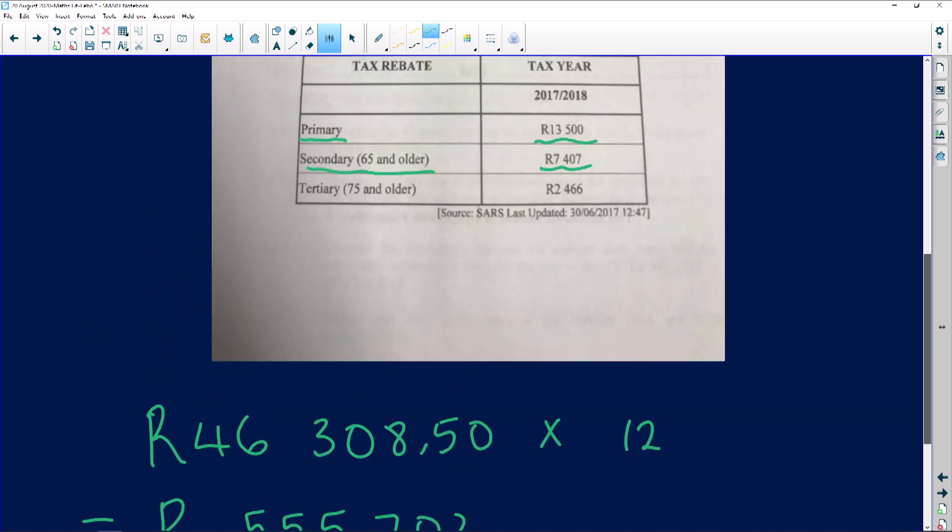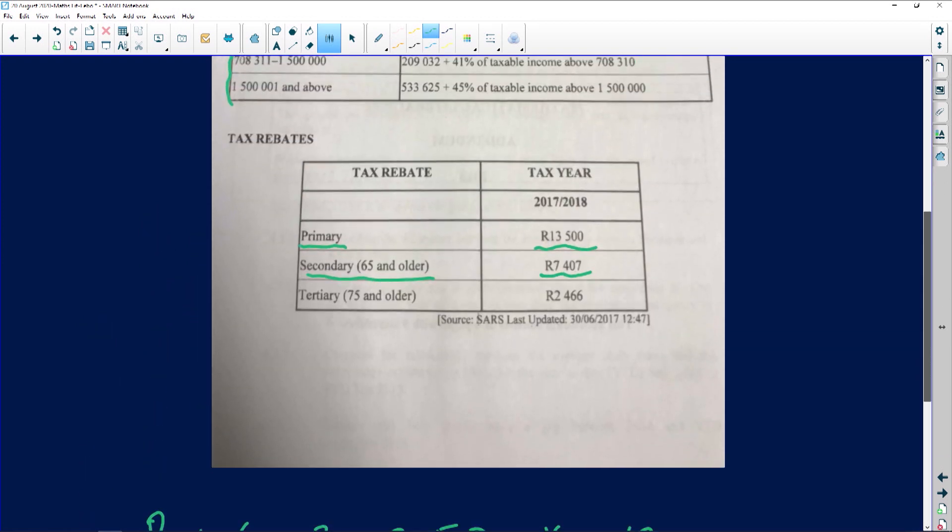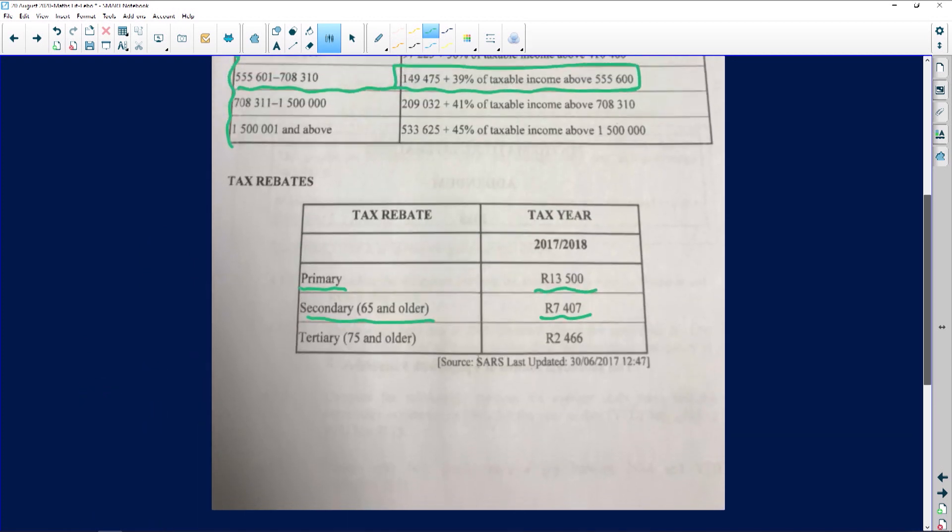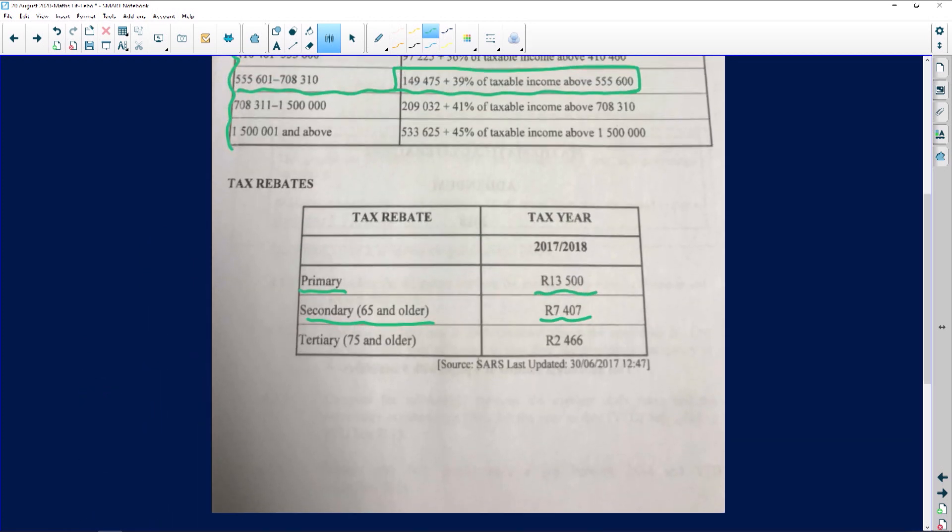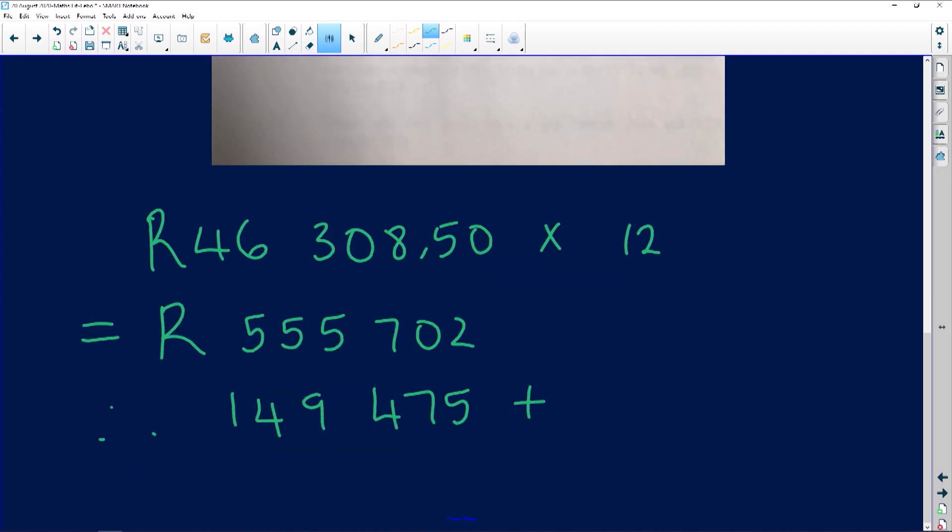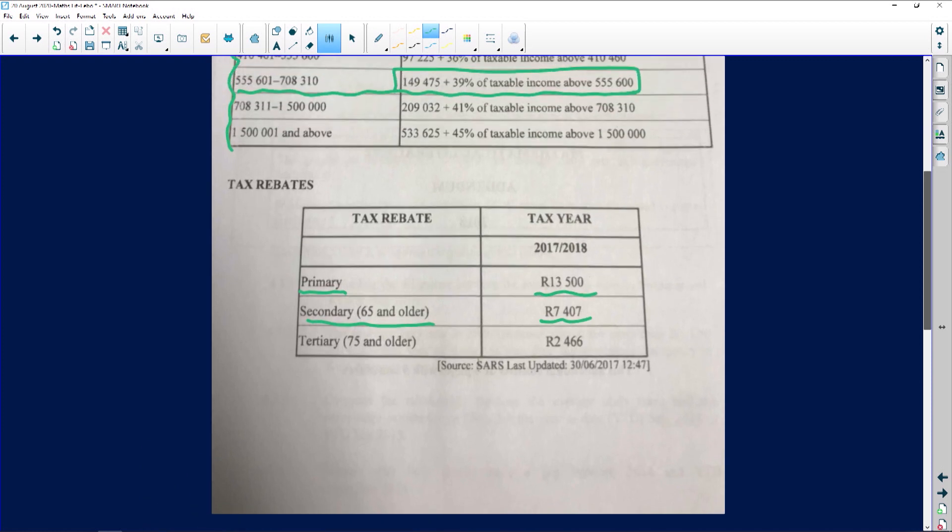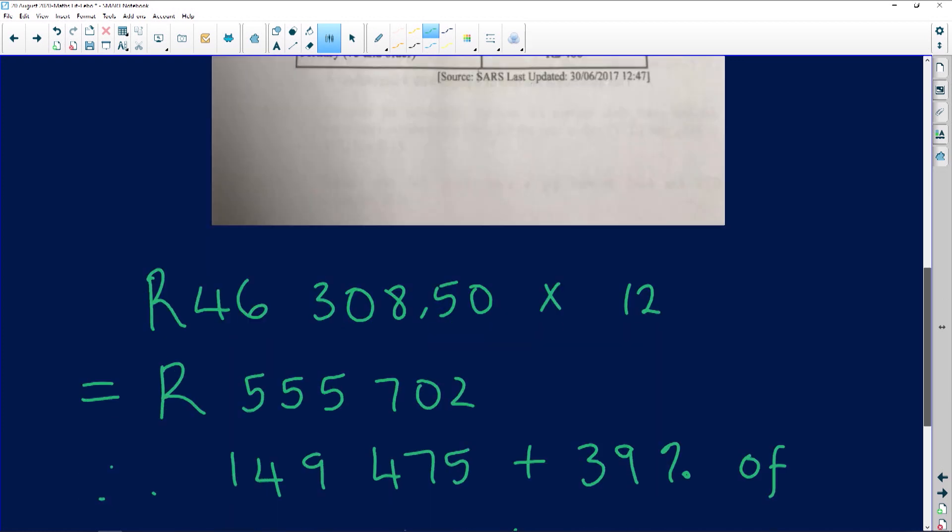I think it's 745, no it's 475. Plus 39% of taxable income, 39% of amount above, let's go see what that amount is, five hundred and fifty-five thousand six hundred.